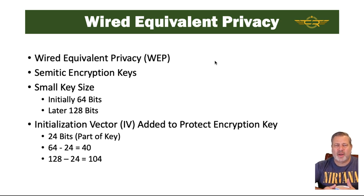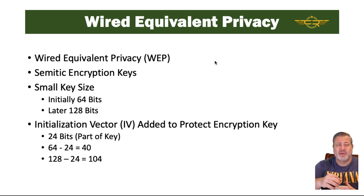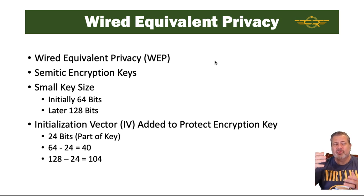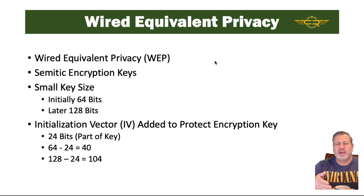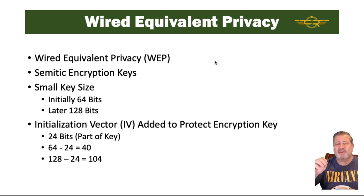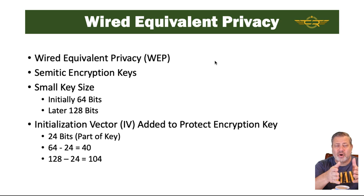Wired Equivalent Privacy, or WEP, was one of the initial encryption protocols put in place to protect us. It uses a symmetric key, meaning everyone has the same key. Initially, the encryption key length was required to be 64 bits, later increased to 128 bits, which was still too small. It had an initialization vector added to protect the encryption key, and that IV was 24 bits — actually part of the key size.